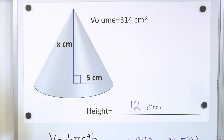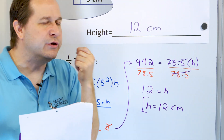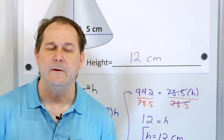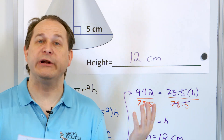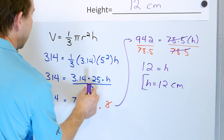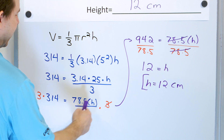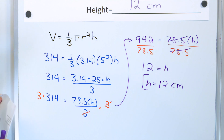Notice that we just reverse-engineered what we had to do. We go in and put in what we know, and then we use the rules of algebra to figure out how to reverse-solve for the answer. We've already learned how to solve equations — moving the 3 to the bottom, multiplying by 3 to cancel, and then dividing by the 78.5 all comes from the rules of algebra.